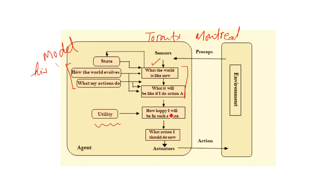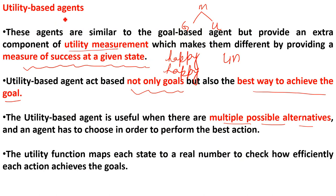So instead of goal-based as discussed in the last lesson, here it is utility-based. We check how happy we will be in each state. At the first stop we are happy, so the action is to continue the journey. At the second stop, check again — happy, continue. At the third stop, unhappy, so we change the route. With the help of actuators we perform our actions, and then we are back in the environment again.